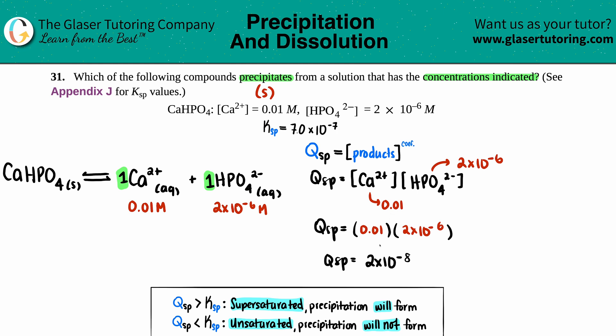Now all you got to do is just compare the Qsp value with the known Ksp. So we have a Qsp of 2 times 10 to the negative 8, and then we have a Ksp value of 7.0 times 10 to the negative 7.